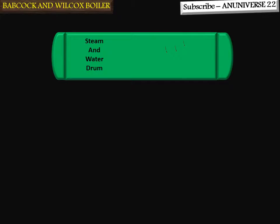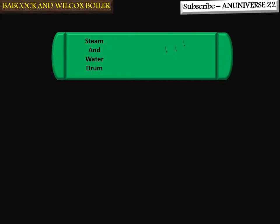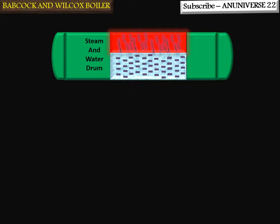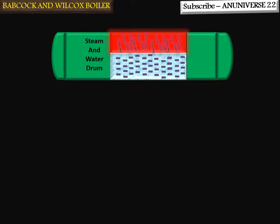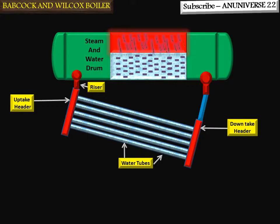Now we will discuss the construction of the Babcock and Wilcox boiler. It consists of a steam separator drum that is mounted at the top, in which water and steam are placed together. One half of the drum is filled with water and the other half is remaining for steam. It is connected by an uptake header and a downtake header, and a large number of water tubes connect the uptake and downtake headers. The water tubes are inclined 5 to 15 degrees to promote water circulation.